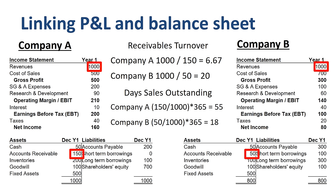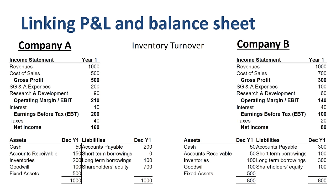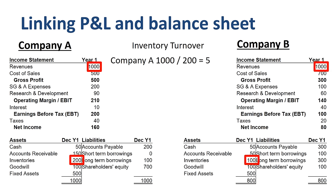The second subset of the asset turnover ratio is inventory turnover — the number of times per year that the business turns its inventory, the ratio between revenue in the income statement and inventory on the balance sheet. That's 5 inventory turns for company A and 10 inventory turns for company B.